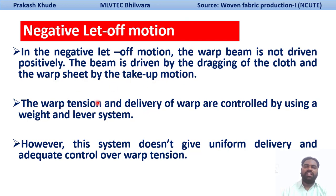So in this case, the warp tension and the delivery of warp is controlled by using your weight and lever systems. However, this system doesn't give a uniform delivery and uniform tension over all the warp ends — that is the basic disadvantage of your negative let-off motion. But for the production of light and medium weight fabric, we go for negative let-off motion.